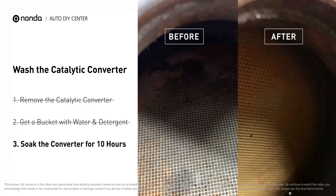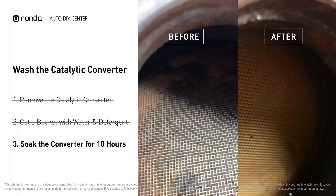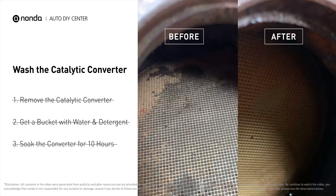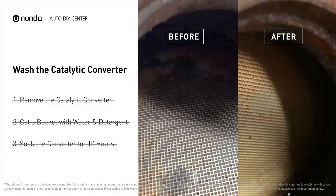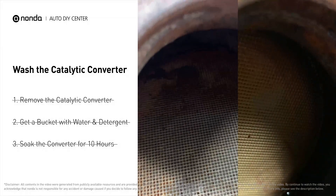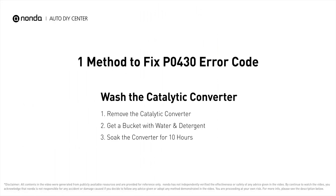You can see by looking inside the converter there are all kinds of little honeycomb shapes — they clog up really easily, and cleaning will often make them open and work again. So here is a practical solution to fix the P0430 error code to save more money on car expenses.